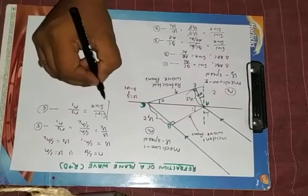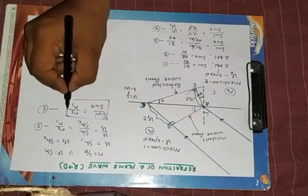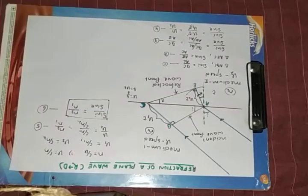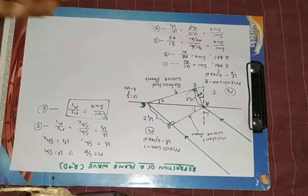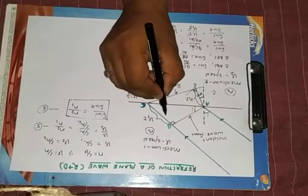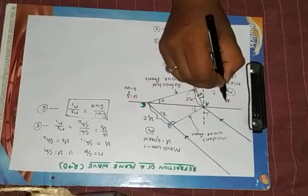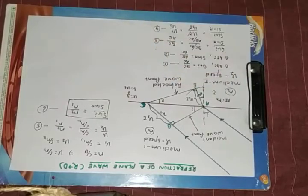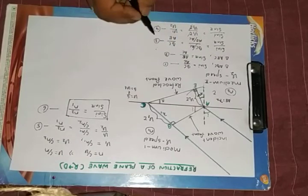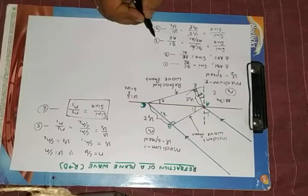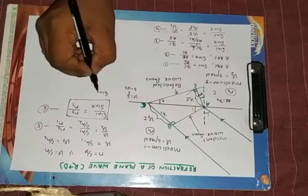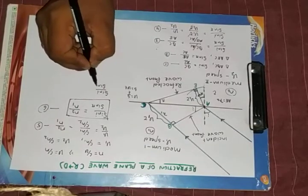I can move further to prove frequency is constant. Let here, the distance is lambda 1. Let here, the distance is lambda 2. So equation 3 can be written as sin i by sin r